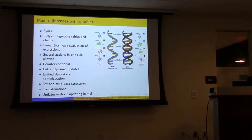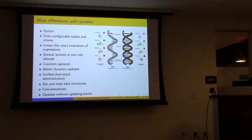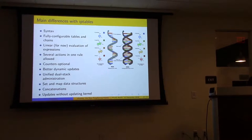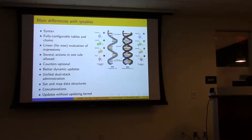Dynamic updates: it's a lot easier in NFTables to add, remove, and modify rules. If you pass a certain flag to the NFT user-space utility, it'll give you what are called handles — IDs that the kernel assigns to each rule. To delete a rule, you get a list of handles, then use the NFT utility to pass in that handle and delete the rule. You can also add rules on the fly, specifying after or before which handle.